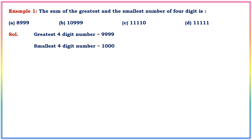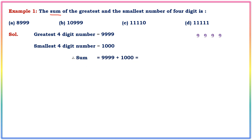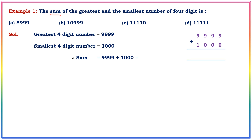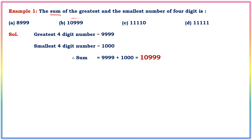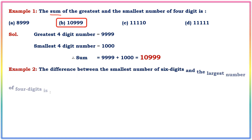Now we find the sum — the addition of 9999 and 1000. So 9999 add 1000 equals 10,999. The answer is 10,999, which is option B. So option B is the correct answer.